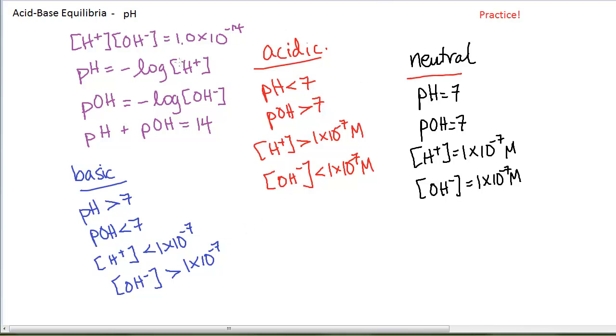So, given one numerical value, either pH, pOH, H plus, or OH minus for a solution, you can calculate the other three.